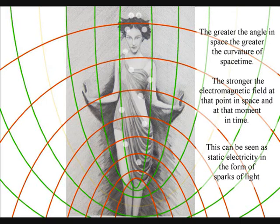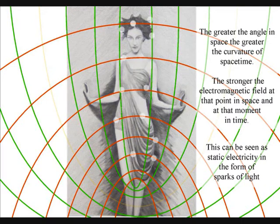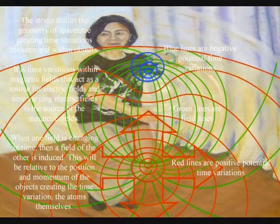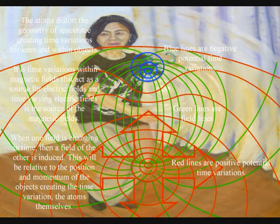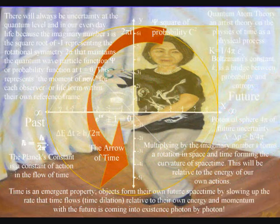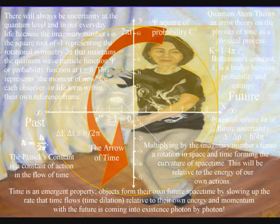It is time variations within magnetic fields that act as a source for electric fields, and time varying electric fields is the source of magnetic fields. When one field is changing in time, then a field of the other is induced. This will be relative to the position and momentum of the objects creating the time variations, the atoms themselves.